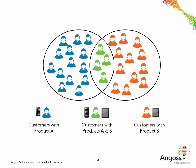Now suppose that you would like to cross-sell product B with customers who have product A. First, you would build a model to score all customers with product A who do not have product B. Customers assigned high scores have a higher probability of buying product B as well as product A.